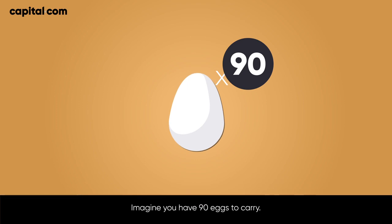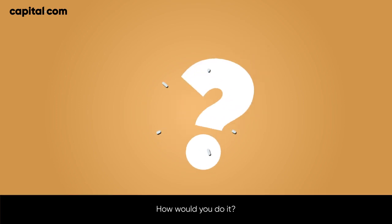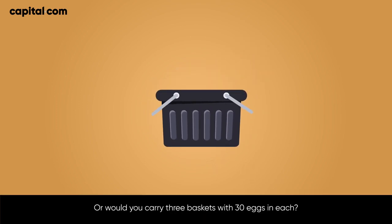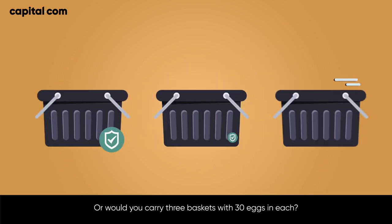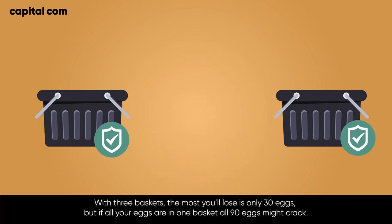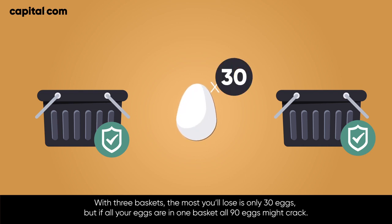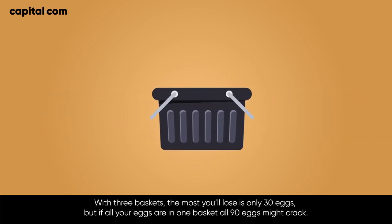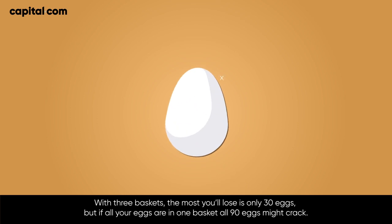Imagine you have 90 eggs to carry. How would you do it? Would you put all of them in one basket? Or would you carry three baskets with 30 eggs in each? The risk is that you drop a basket. With three baskets, the most you lose is only 30 eggs. But if all your eggs are in one basket, all 90 eggs might crack.